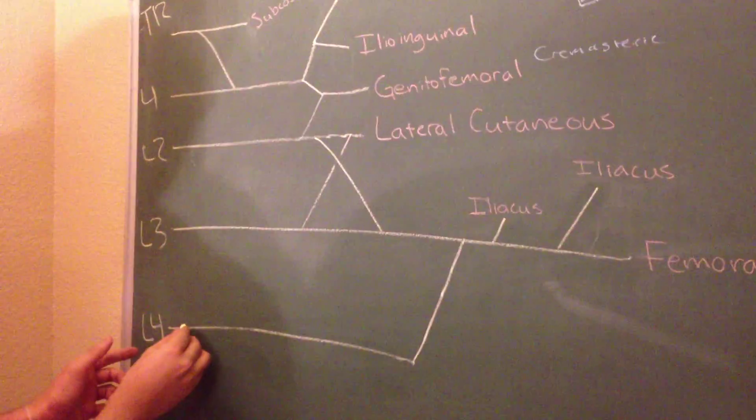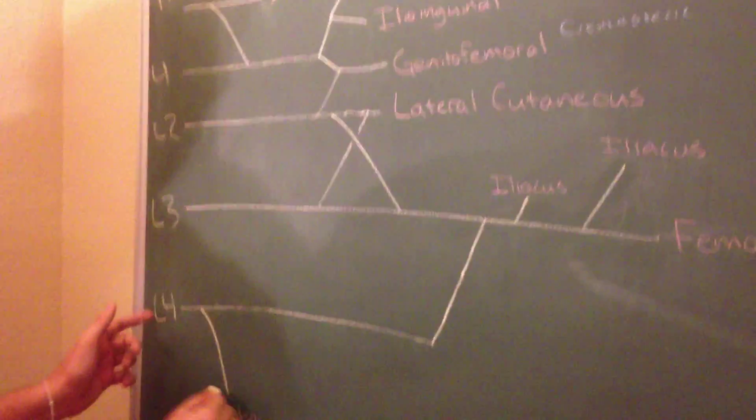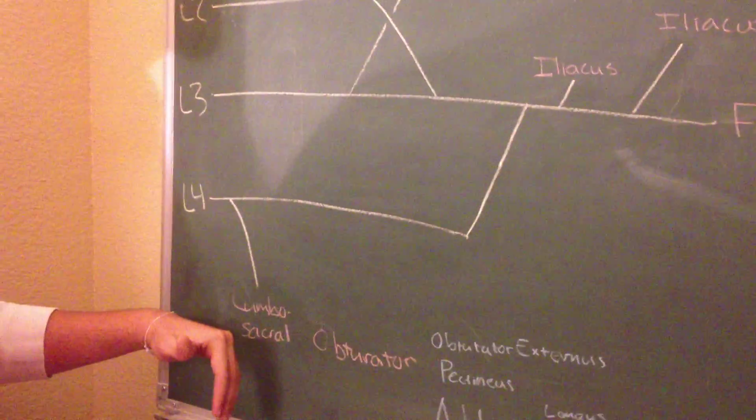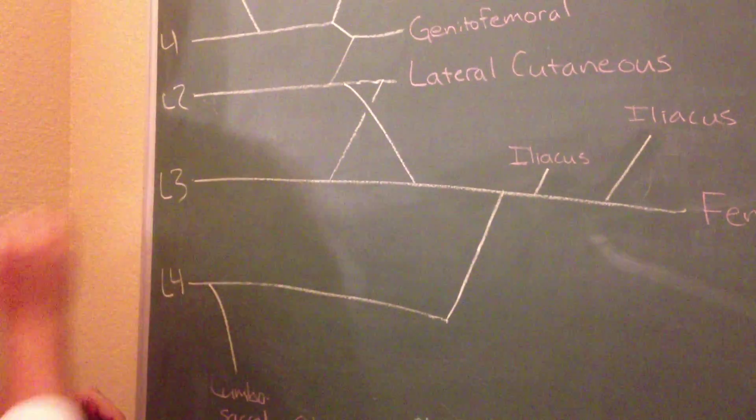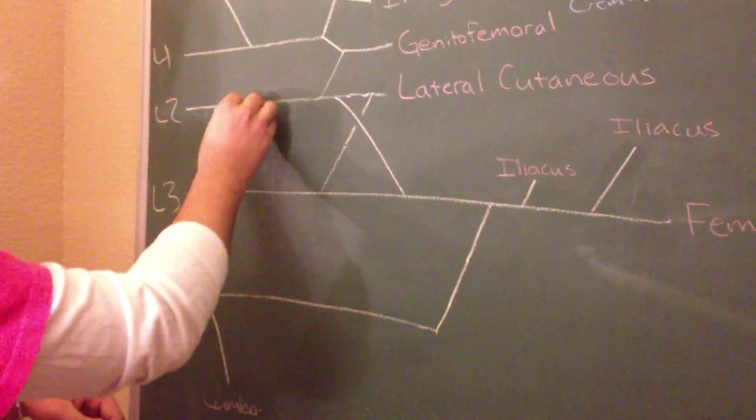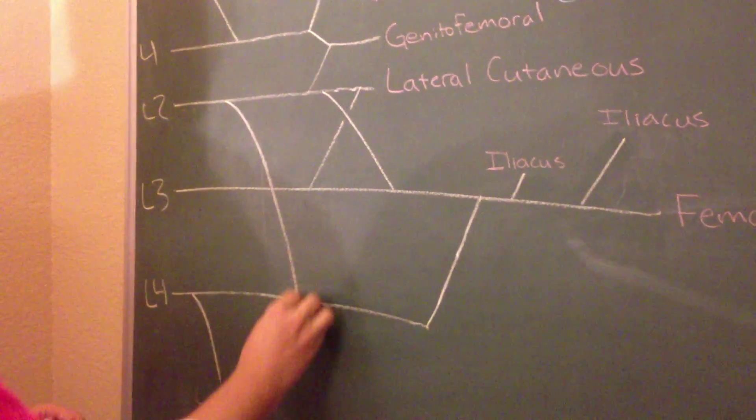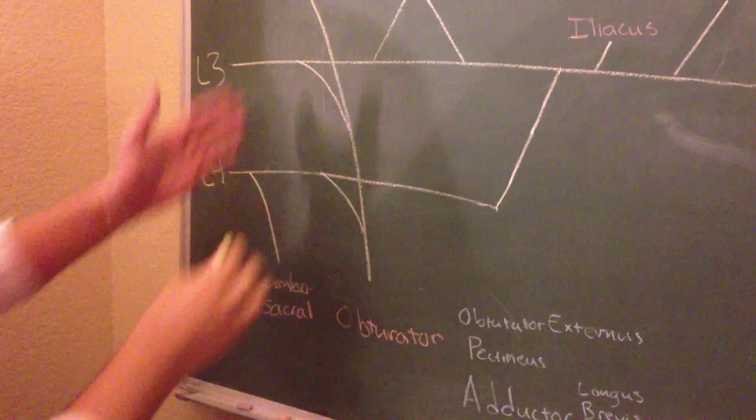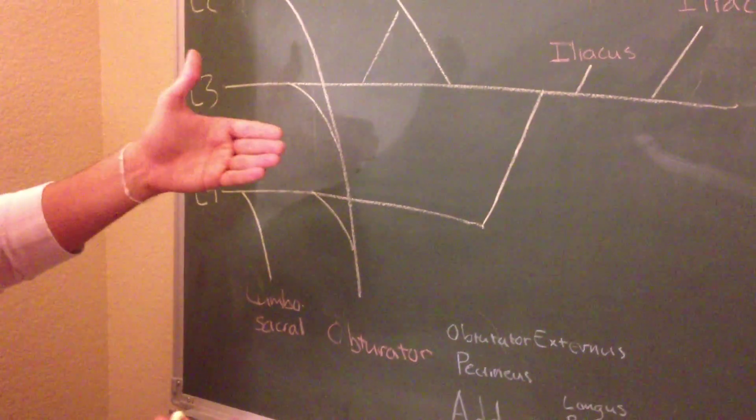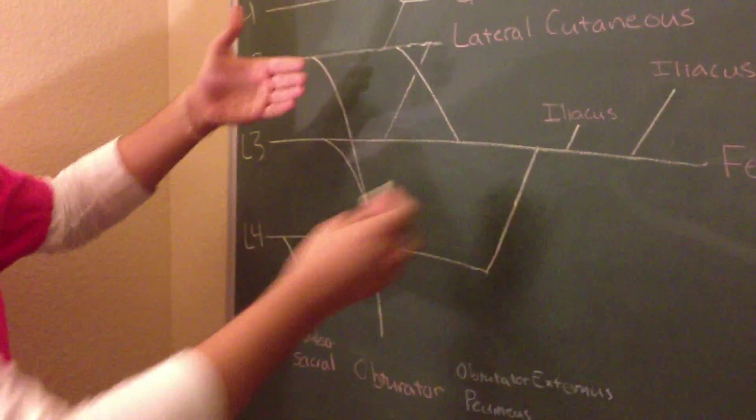Another thing is that L4 is going to branch off to the lumbosacral, and that's going to be our connection to the sacral plexus. And L2, L3, and L4 all have a common nerve, which is the obturator nerve. The obturator nerve is more anterior to the plexus than all these other nerves.